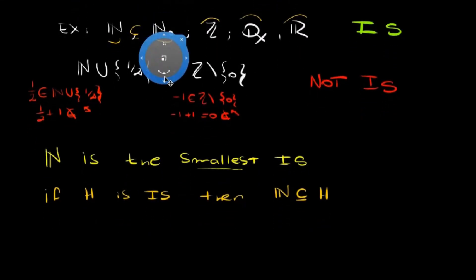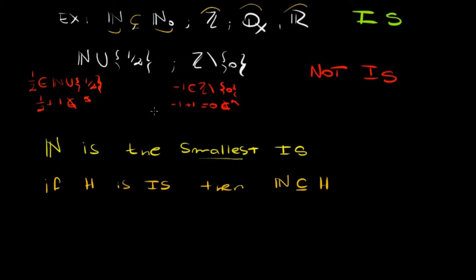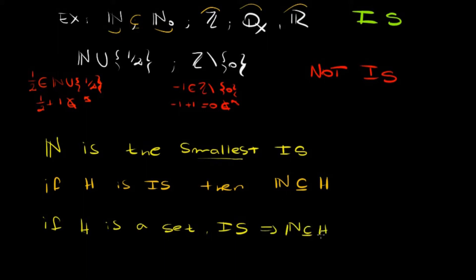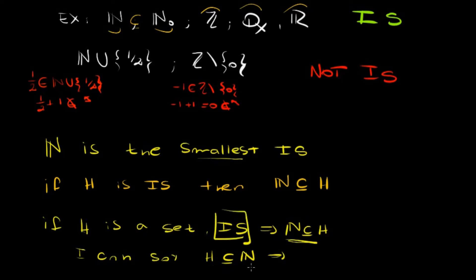What we want to use this for: if h is an inductive set, this gives us that the natural numbers are included in h. And if I'm also able to prove that h is included in the natural numbers, then I have a double inclusion, so h equals the natural numbers. So if I define h as all natural numbers that verify that P(n) is true, and I prove h is inductive, then P(n) is true for all natural numbers.